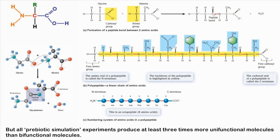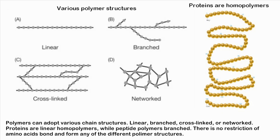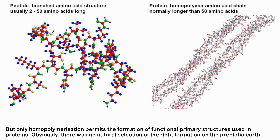All prebiotic simulation experiments produce at least three times more unifunctional molecules than bifunctional molecules. Polymers can adopt various chain structures: linear, branched, cross-linked, or networked. Proteins are linear homopolymers, while peptide polymers are branched. Only homopolymerization permits the formation of functional primary structures used in proteins. Obviously, there was no natural selection of the right formation on the prebiotic Earth.